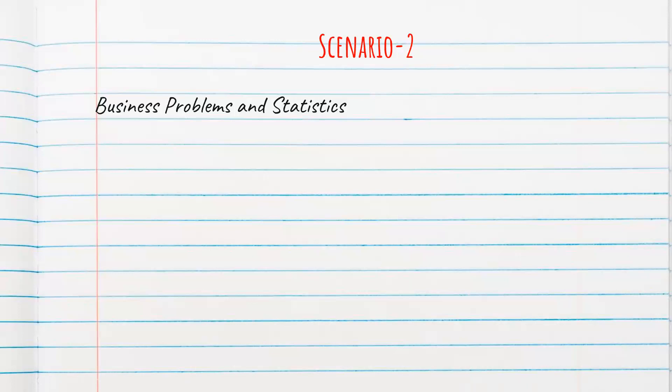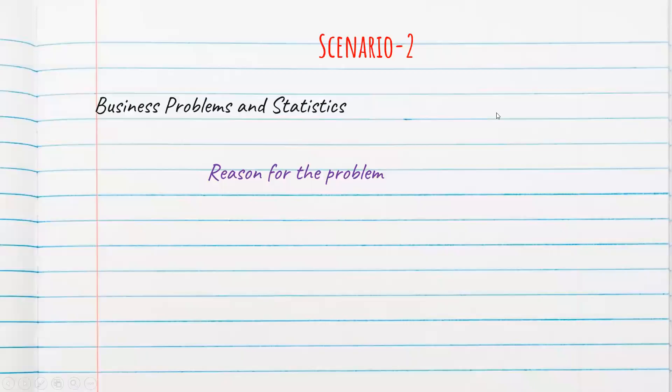So once you do that, step number two is that you will try to find out the reason for the problem. What was the problem? I was not happy with the business C. So you will now try to find out the reason for the problem.